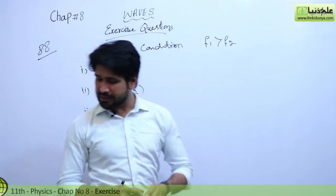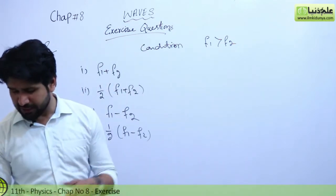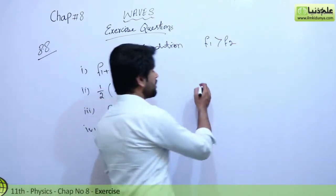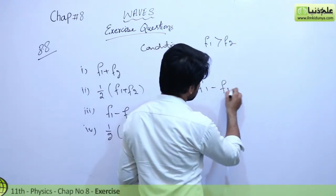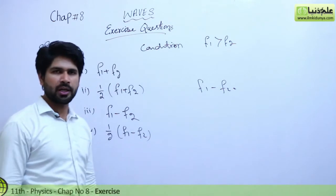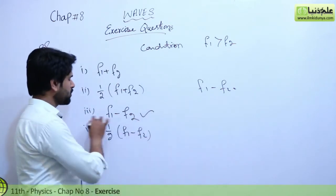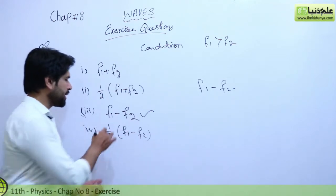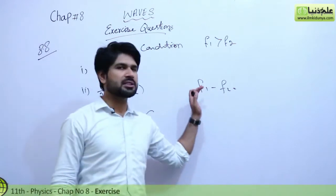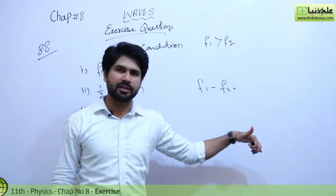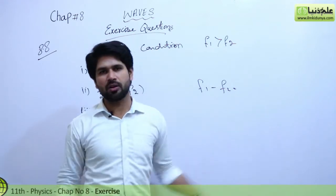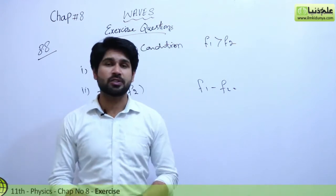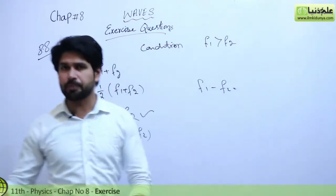Students, this question is about the number of beats, where two notes of frequencies f1 and f2 are sounded together and beats are formed. We know that beats are formed when there is a difference between the frequencies of two sounding bodies. So our required answer should be choice number three: f1 minus f2, the difference of the first to the second frequency. The number of beats is equal to the difference of the frequencies produced per second.